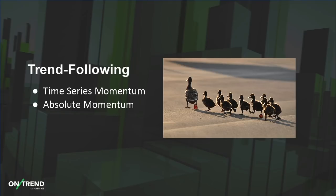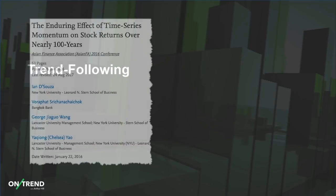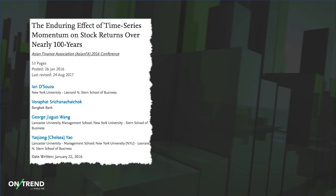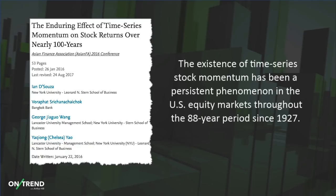Now, keep in mind we're dealing with probabilities here. The probability is that if there is an uptrend, you have a better chance of making money than if a stock is in a downtrend. Don't take my word for it — there have been a number of studies and academic papers supporting trend following. A paper by Ian D'Souza and his colleagues notes that time series stock momentum has been a persistent phenomenon in U.S. equity markets throughout the 88-year period since 1927. It doesn't work every month, but over time, trend following shows a propensity to work.